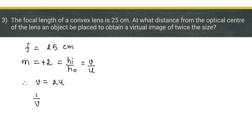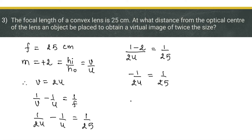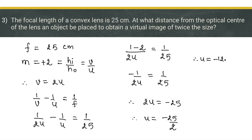Using the lens formula: 1/v - 1/u = 1/f, and substituting v = 2u: 1/(2u) - 1/u = 1/25. Taking LCM of 2u, the numerator gives 1 - 2 = -1, so -1/(2u) = 1/25. Therefore 2u = -25, giving u = -12.5 centimeters.